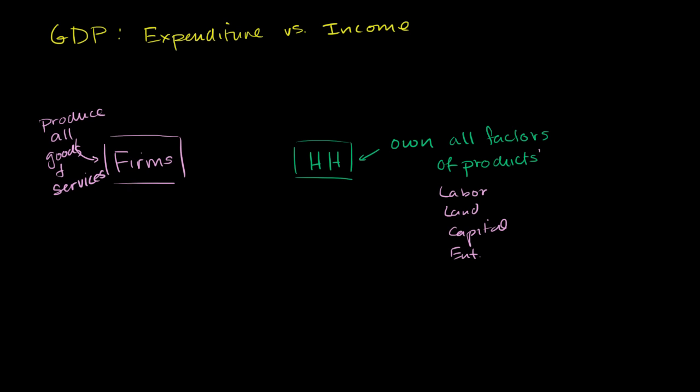So just like we saw with that first example of the island, the households do all of the expenditures, and this ends up being all of the revenue, all of the revenue for the firms. And then the firms spend a lot - you take that revenue and then spend it to rent many of these factors of production, or some or all of these factors of production.